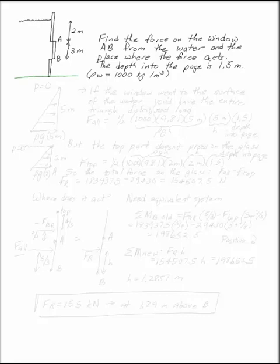So A is 2 meters down from the surface of the water, and B is 5 meters down from the surface of the water. If the window AB went all the way up to the surface, we'd be all set.